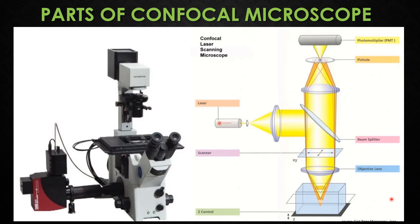The first part is the objective lens, a high-resolution lens used to collect and focus light from the samples. The second part is the laser light source, which produces a focused beam of light used to scan the sample and excite the fluorophores within the samples. It can be chosen via a selection device and is matched with the fluorophores used in the experiments.